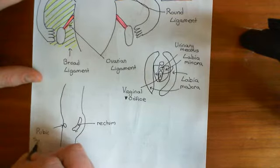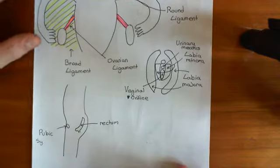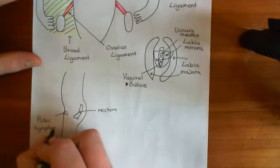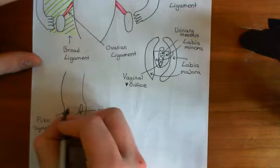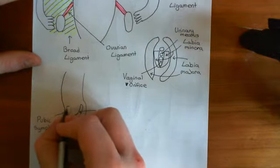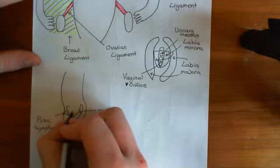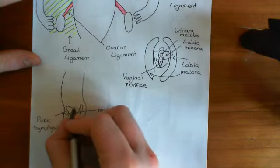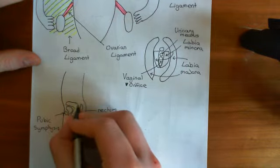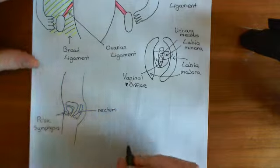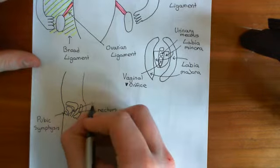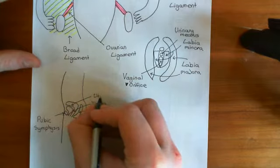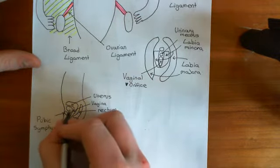The pubic symphysis is where the two halves of the pelvic bone have joined together at the pubic region. Behind it you have the bladder, so we'll put the bladder here. Then we'll stick in the vagina in the middle, and then the uterus comes out above. So this is the vagina here, continuing on to the uterus up here, and this is the bladder.